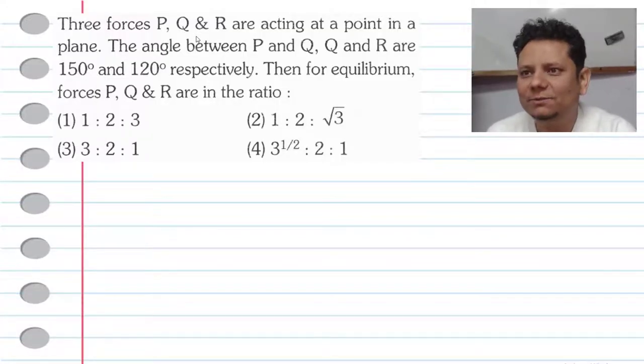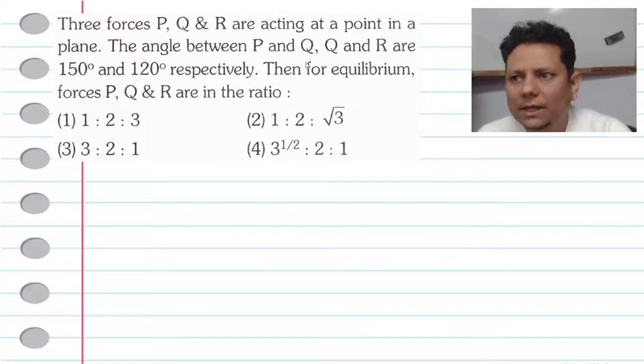Next question. Question says three forces P, Q and R are at a point in a plane. The angle between P and Q, Q and R are 150 degree and 120 degree respectively.